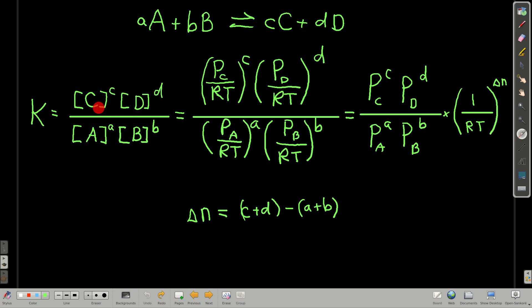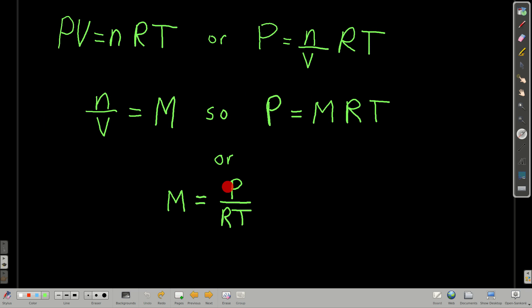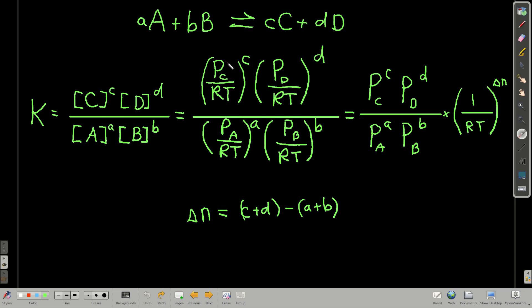But now, instead of the concentrations, which are molarities, we're going to replace them with the pressure over RT. Because we just said that P over RT is equal to the concentration. So here, the pressure of gas C, now these are going to be gases, is going to be the partial pressure of that gas in the container. And we're going to raise it to the power of its coefficient. So the partial pressure of D over RT to the power of D, and so on.